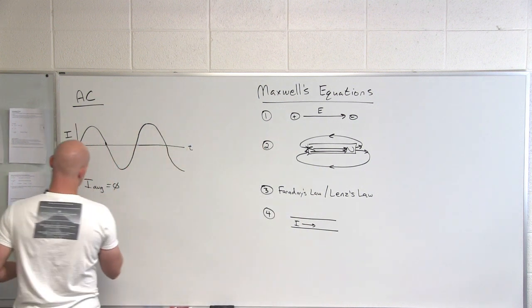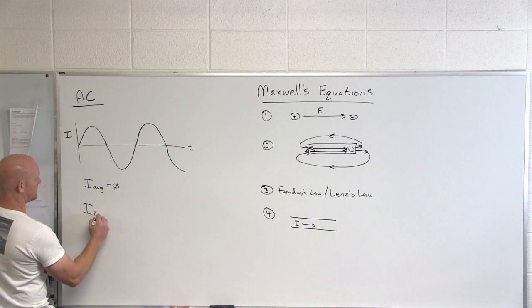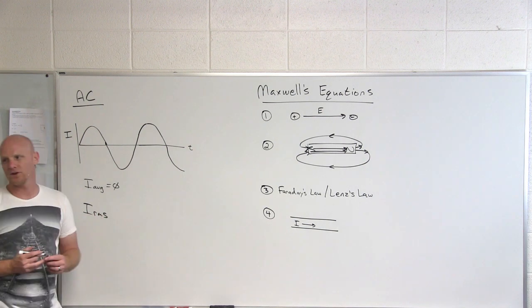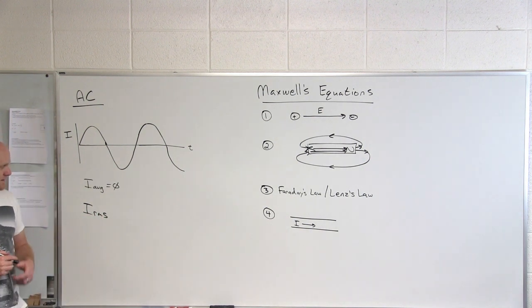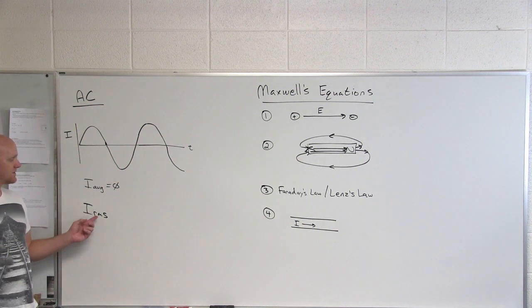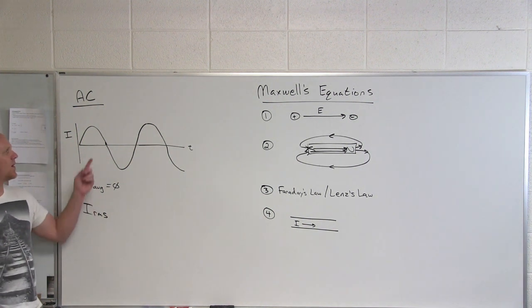And so something that's a little more convenient is what we call the root mean square current, and we can do this for root mean square potential difference as well. And so what they do with this is they take all of the currents over time and they square them all.